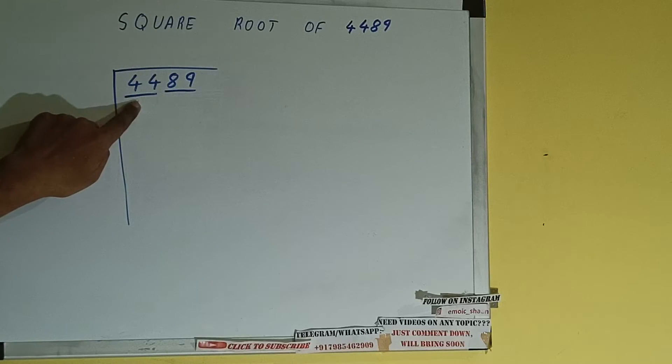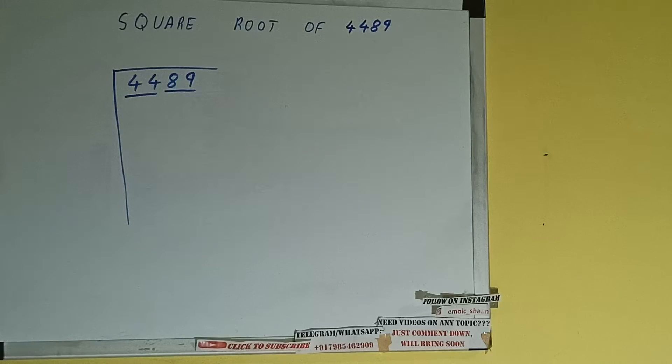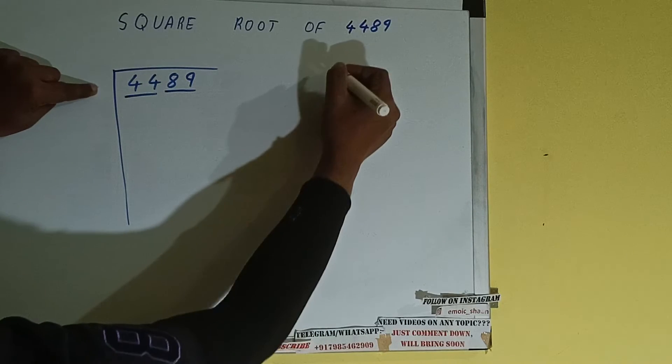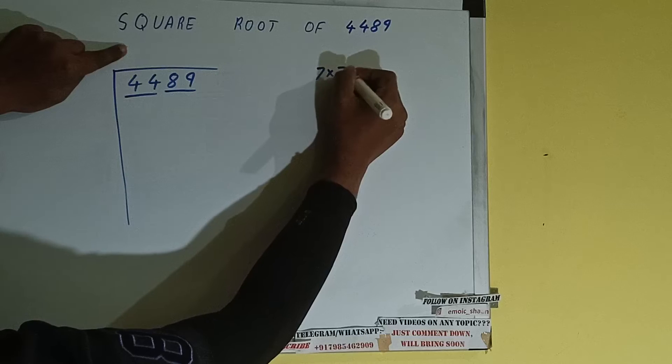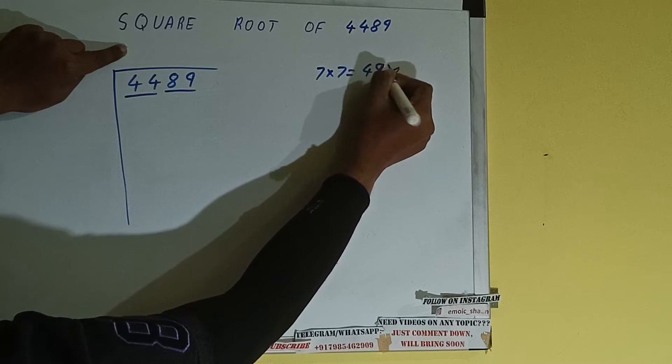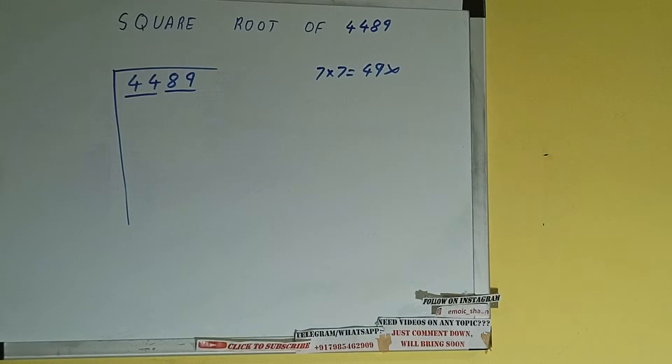So first we'll divide this 44 and then we'll bring down the other pair. The rule is whatever number we write here we have to write here also. So if we write 7 here and 7 here it will be 49 which is greater than 44. So we cannot take it.